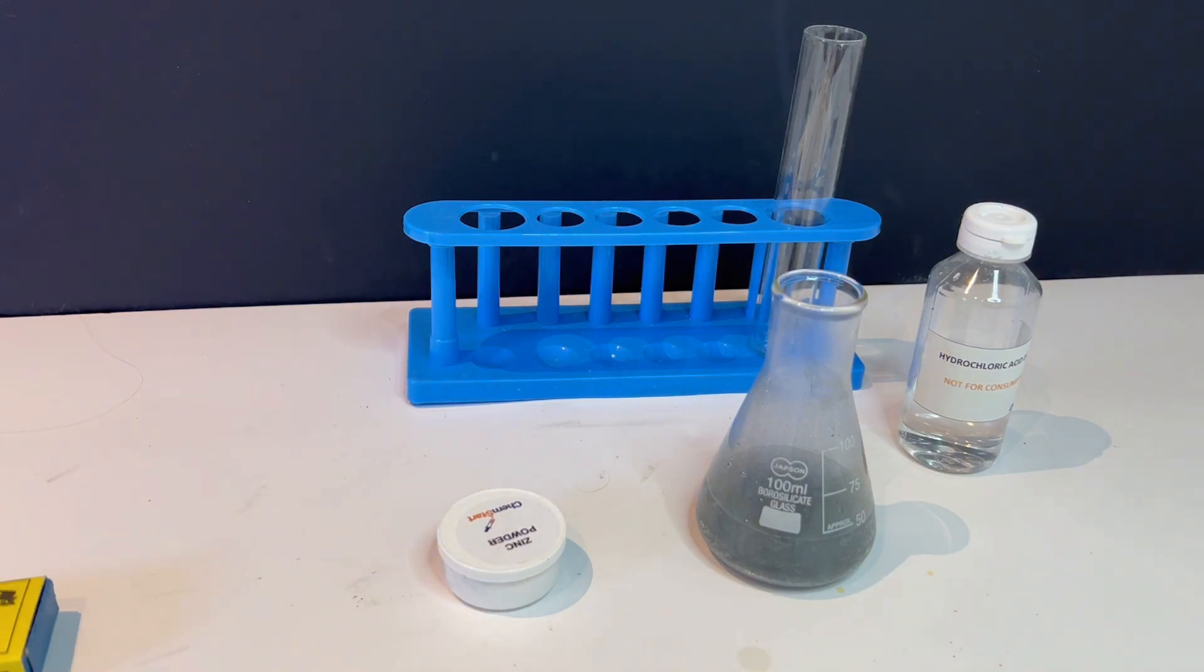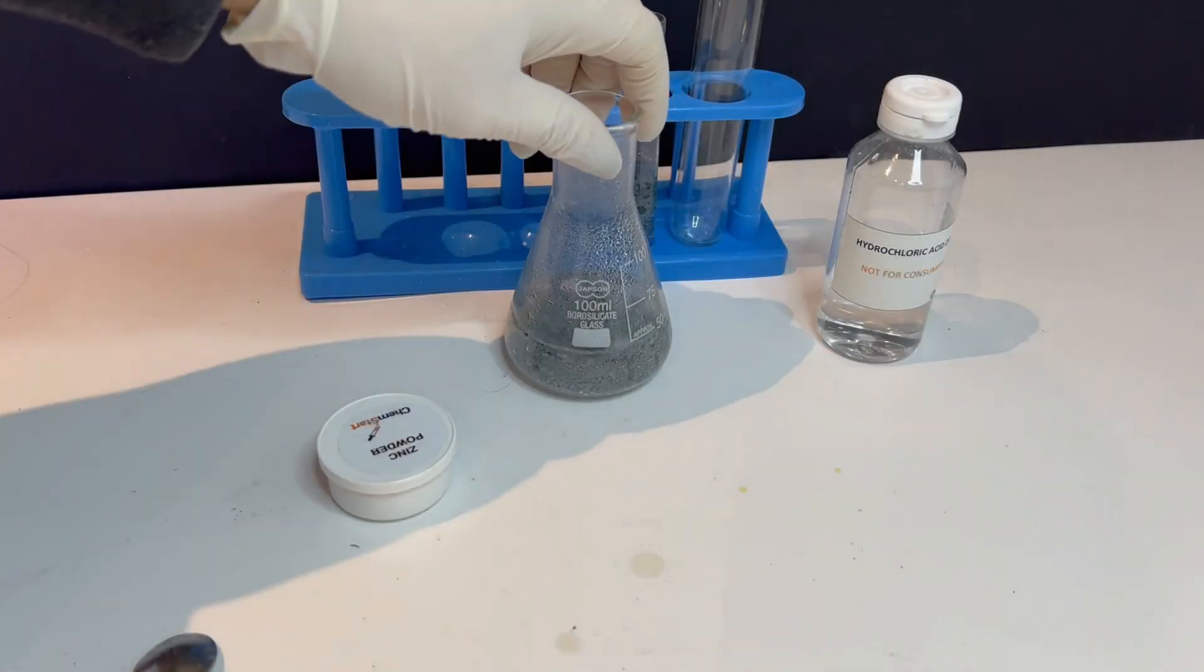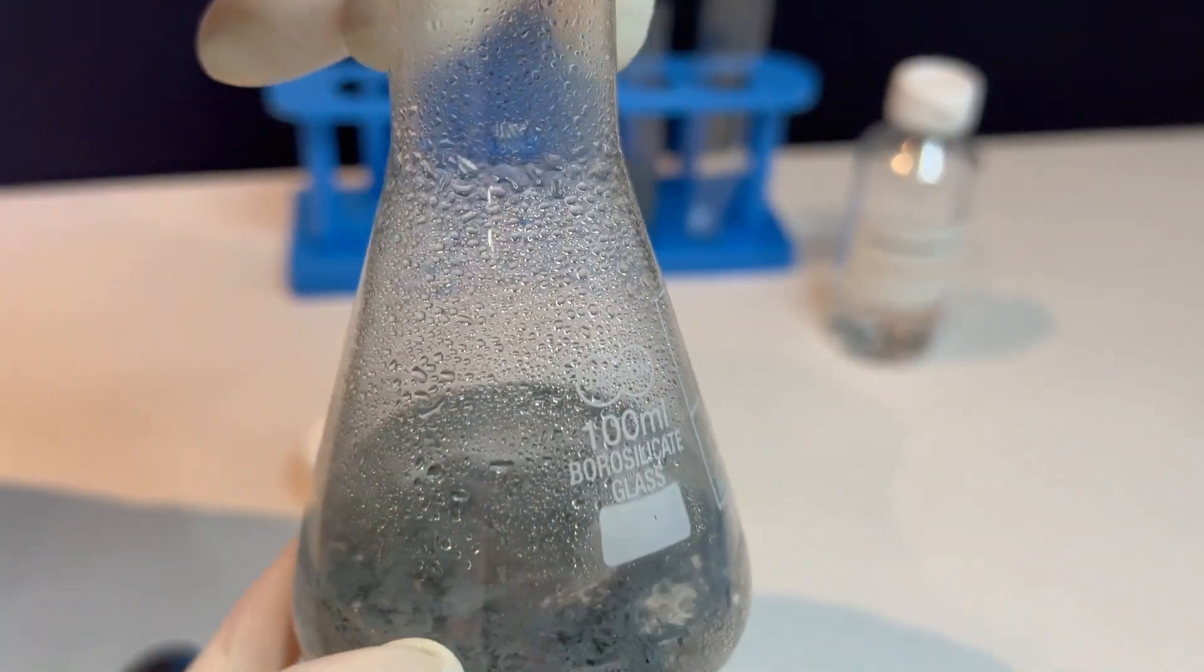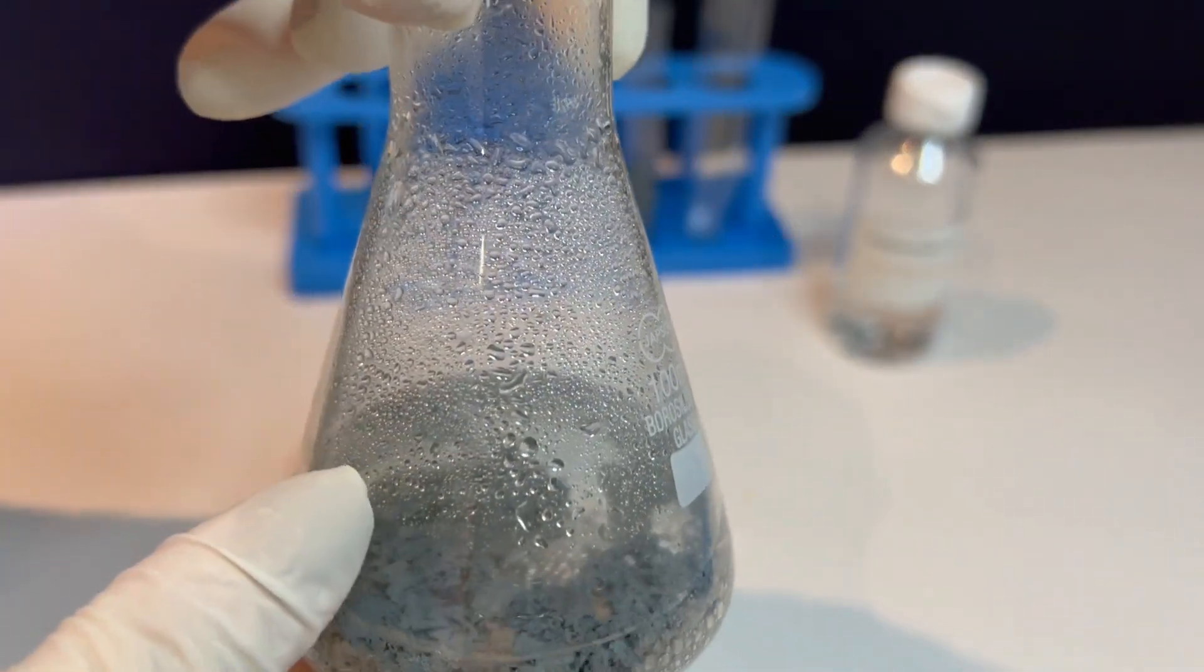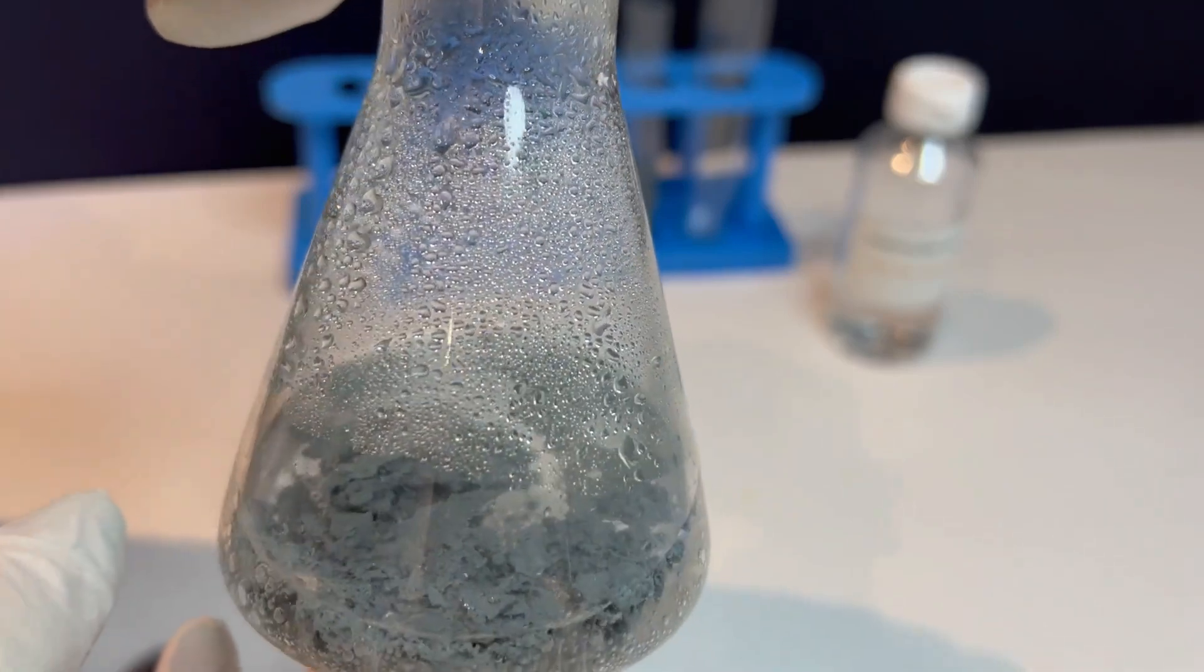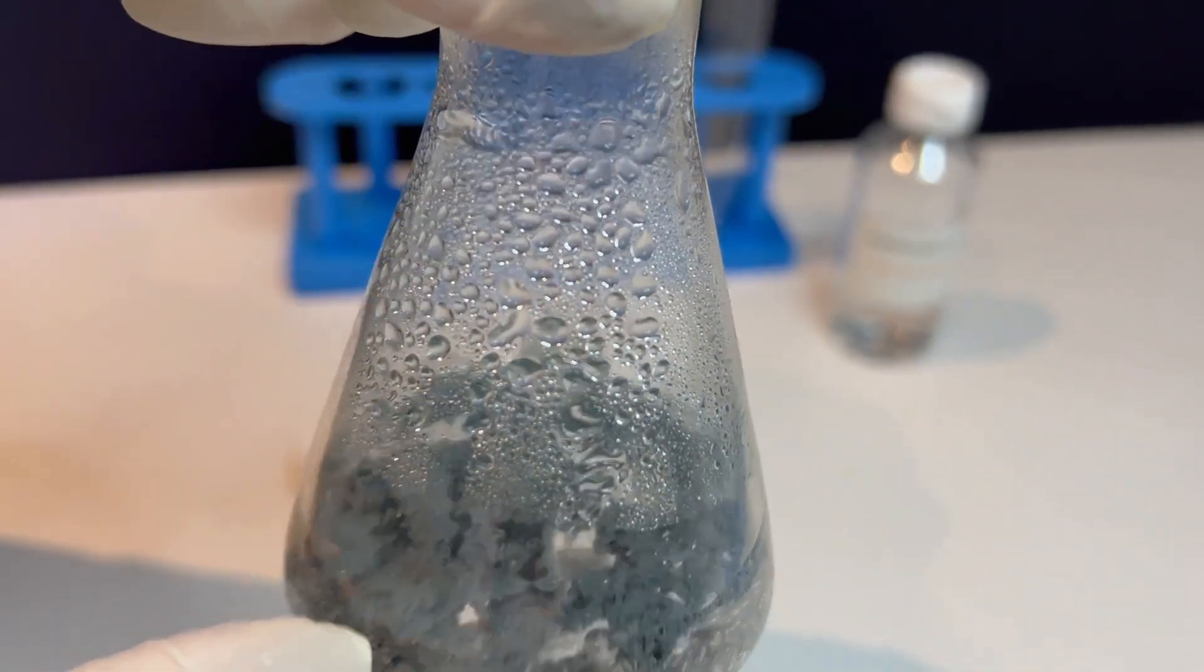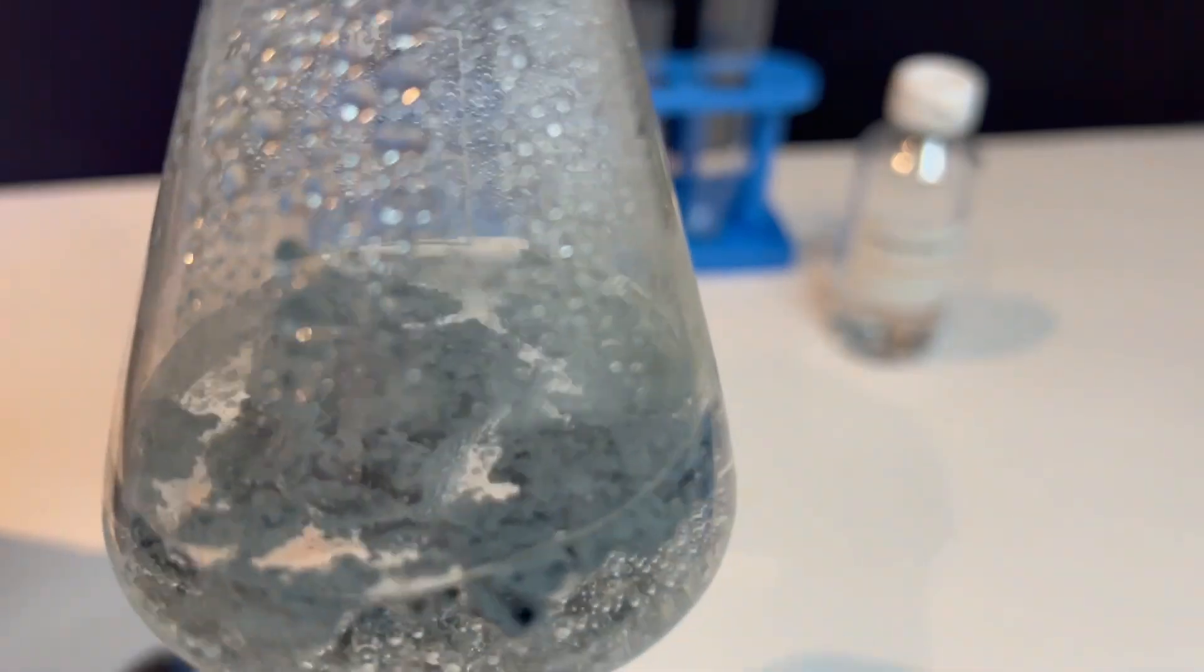So what did we learn? When zinc powder reacts with dilute hydrochloric acid, it produces hydrogen gas, and we can confirm this using a simple flame test. This experiment is a great way to observe a single displacement reaction, test for hydrogen gas, and practice safe chemical handling.